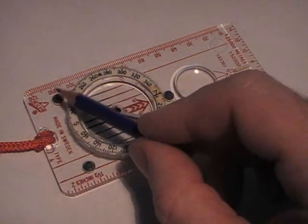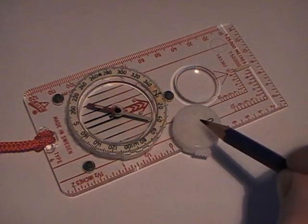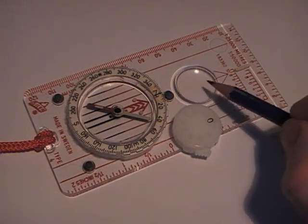So three rubber feet to help grip the map. It's got a step counter, magnifying glass.